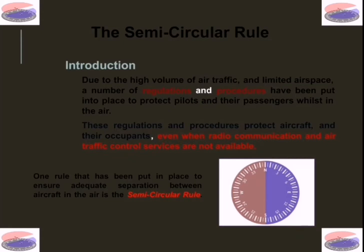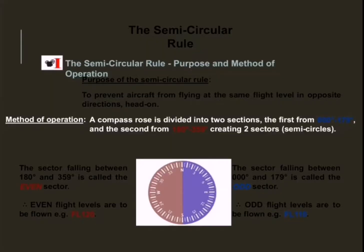One of the worst situations to be in is to be flying head-on with another aircraft unknowingly, at the same level and at an extremely high closing speed. This could lead to an accident and an air collision. One rule that has been put in place to prevent such a situation is the semicircular rule. The main purpose of the semicircular rule is to prevent aircraft from flying at the same flight level in opposite directions and to avoid head-ons.